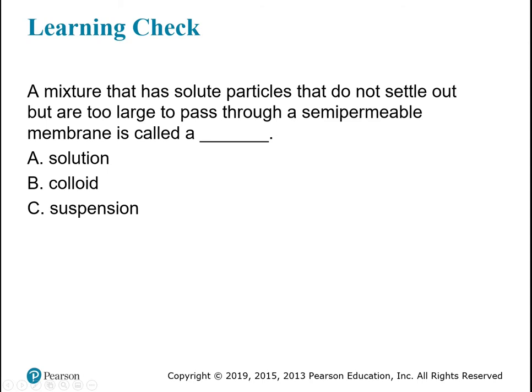Here's a quick learning check: a mixture that has solute particles that do not settle out but are too large to pass through a semipermeable membrane is called — what? The key here is that the particles do not settle out of solution — that's going to be a colloid. Make sure you know those three types — solution, colloid, and suspension — and you'll be fine.